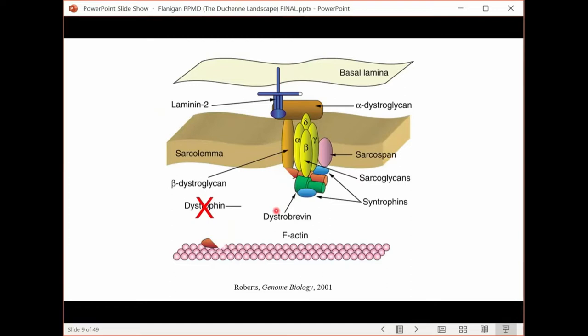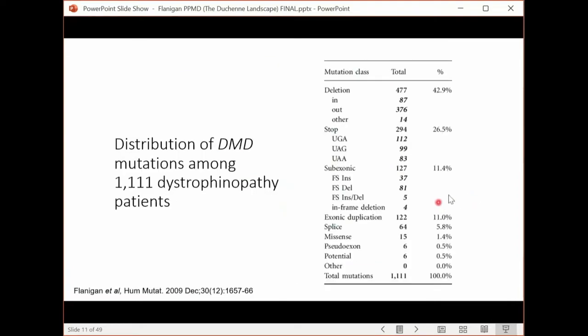Becker muscular dystrophy is associated with a partially functional protein. That partially functional protein, easiest demonstrated by the missing rod domain portion, some portion of the rod domain. There's still a shortened version of the rod domain, so there's partial function. So we get a slower process of degeneration and regeneration. This is the concept of Duchenne versus Becker muscular dystrophy.